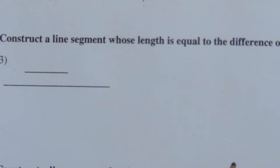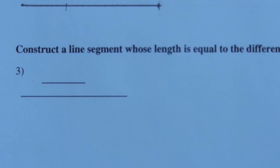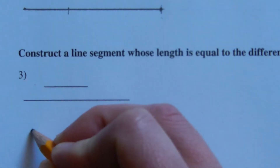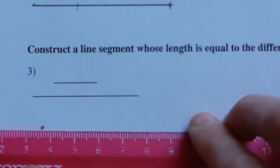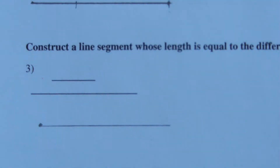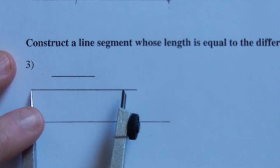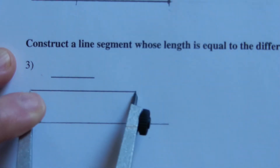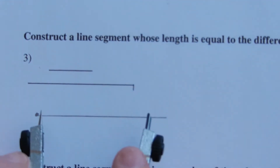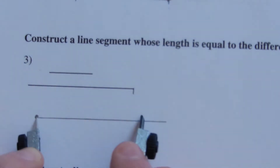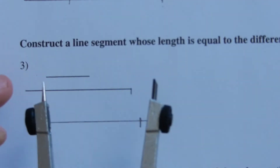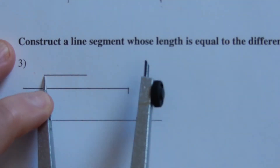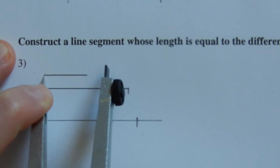Number three: construct a line segment whose length is equal to the difference of the lengths of the given line segments. We're going to take the larger line and subtract the smaller line. Creating my new endpoint, I draw a straight line extending off of it. Now I take the longer given segment, put my compass points on each of its endpoints, and starting on my created endpoint, mark my new endpoint.